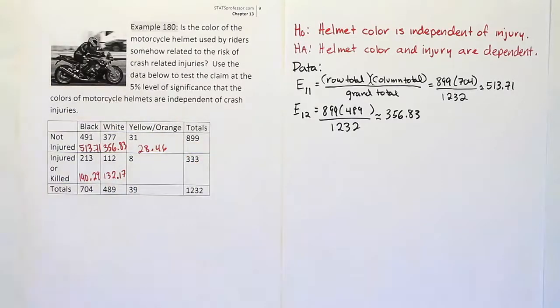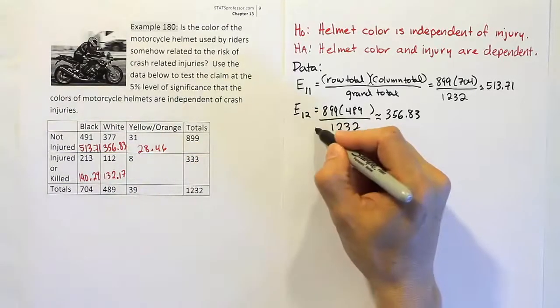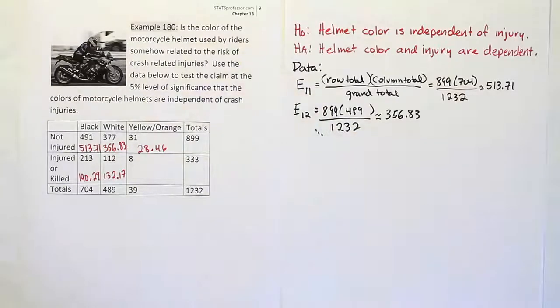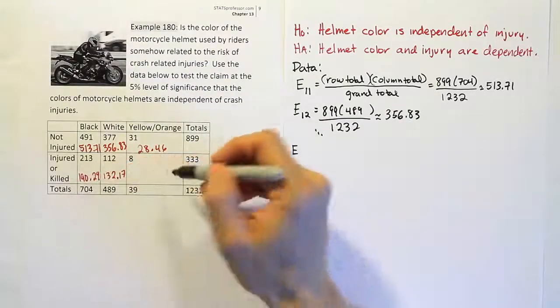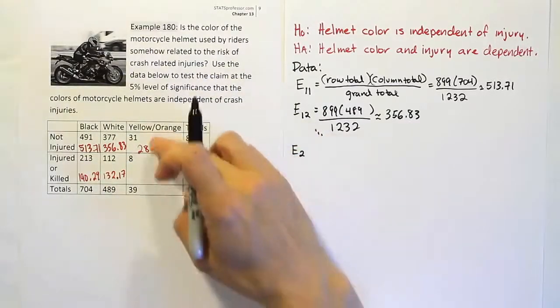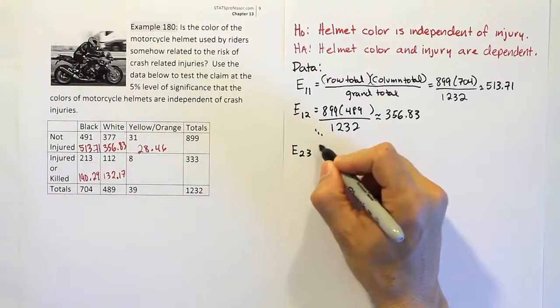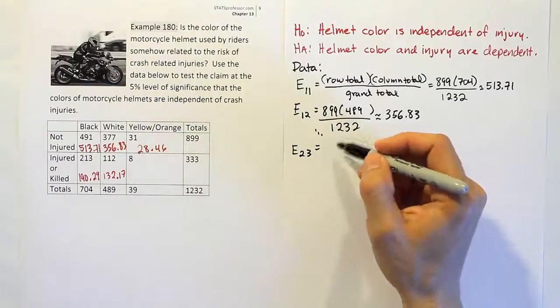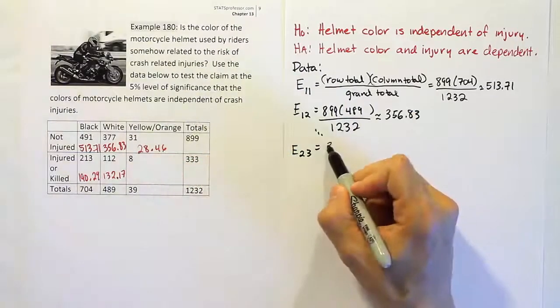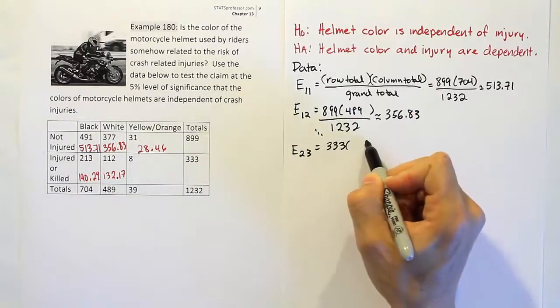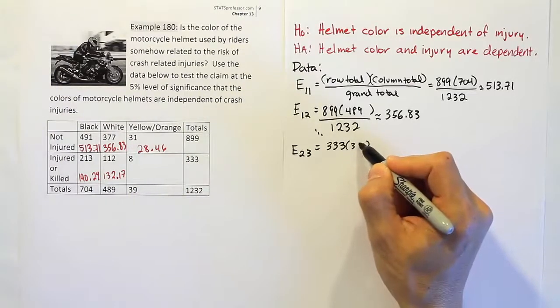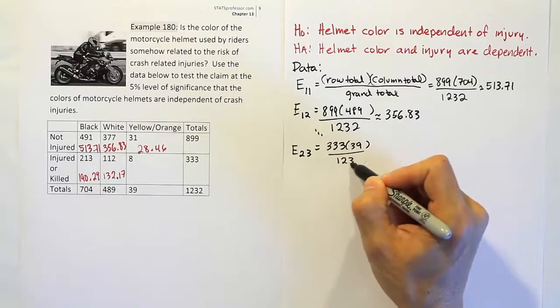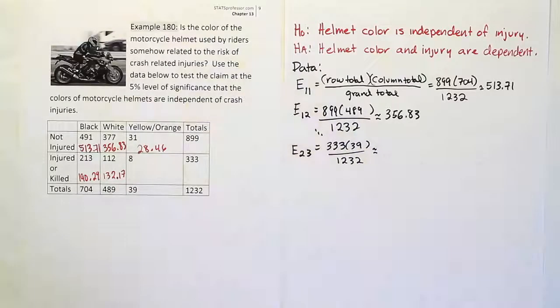I'm going to do this last cell with you just for good measure. We have the traditional thing we do, the first two and then the last one just for good check. What is the name of that last position? It's in the second row and third column. That will be the row total for the second row, which is 333, times the column total which is 39 for that third column, divided by the grand total 1,232.